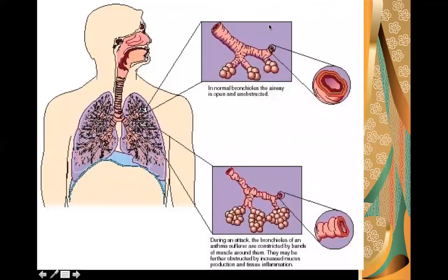This is the bronchiole of a normal individual and this is that of an asthmatic patient. You can see how constricted the asthmatic bronchiole appears due to spasm of the bronchial muscles, which decreases the size of the bronchial lumen and leads to respiratory distress. There is also increased mucous secretion and inflammation of the mucous membranes, which further hinders the breathing process.